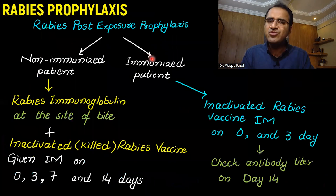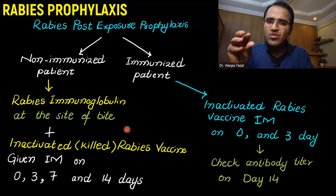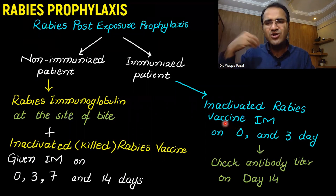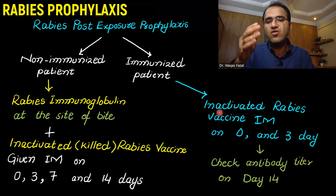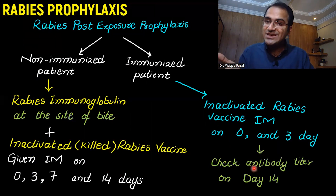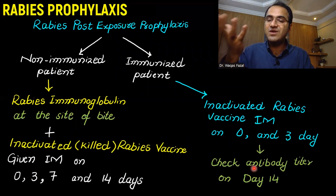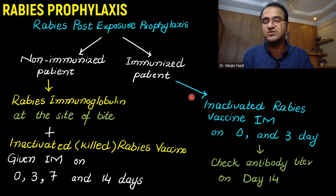If a patient is already immunized with rabies vaccine and now has been bitten, rabies immunoglobulins are not needed because that patient already has antibodies against the rabies virus. They just need a booster dose of rabies vaccine — two doses only, at day 0 and day 3. Then you check the antibody titers at day 14 to see whether they have developed a good immune response against the virus.